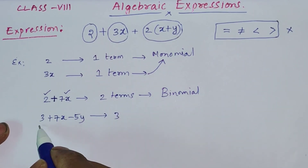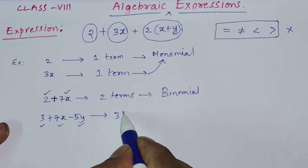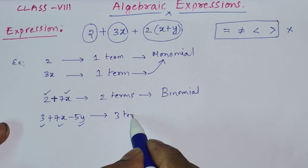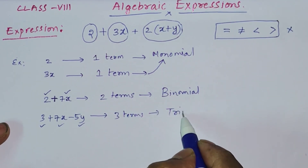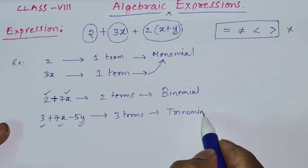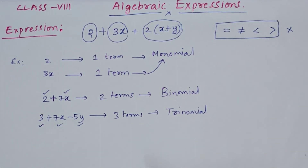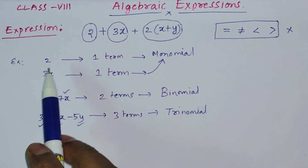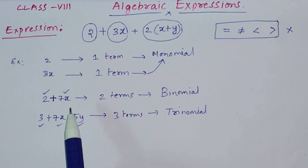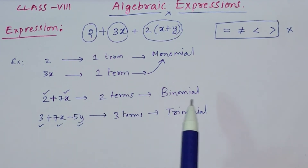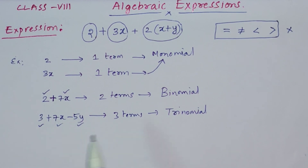Similarly, 3 plus 7x minus 5y has three terms, so it is called a trinomial. To summarize: if there is only one term it is a monomial, if there are two terms it is a binomial, and if there are three terms it is a trinomial.